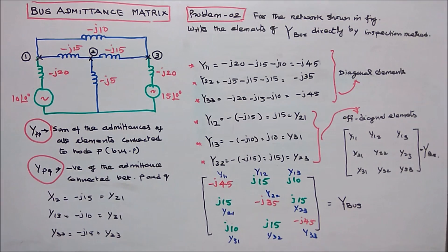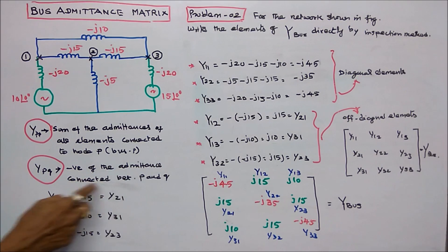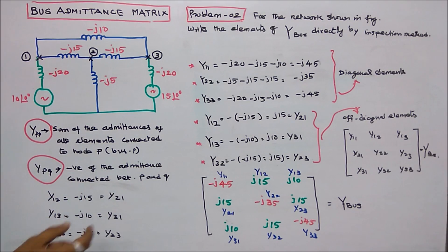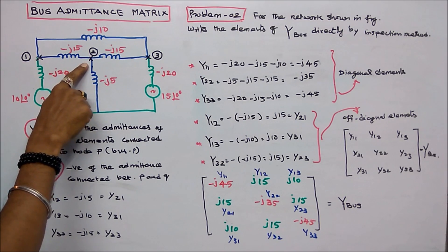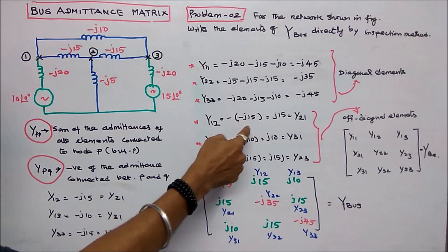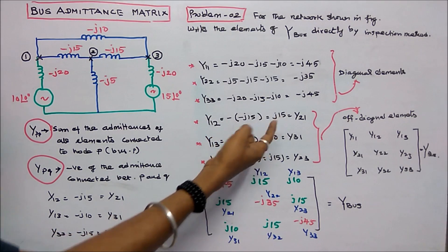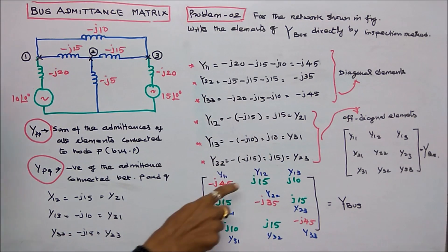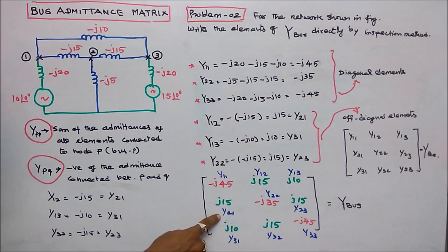The next step is to find the off-diagonal elements, which equal the negative of the admittances connected between P and Q. Y12 equals negative of minus J15, which equals J15, and Y21 also equals J15.